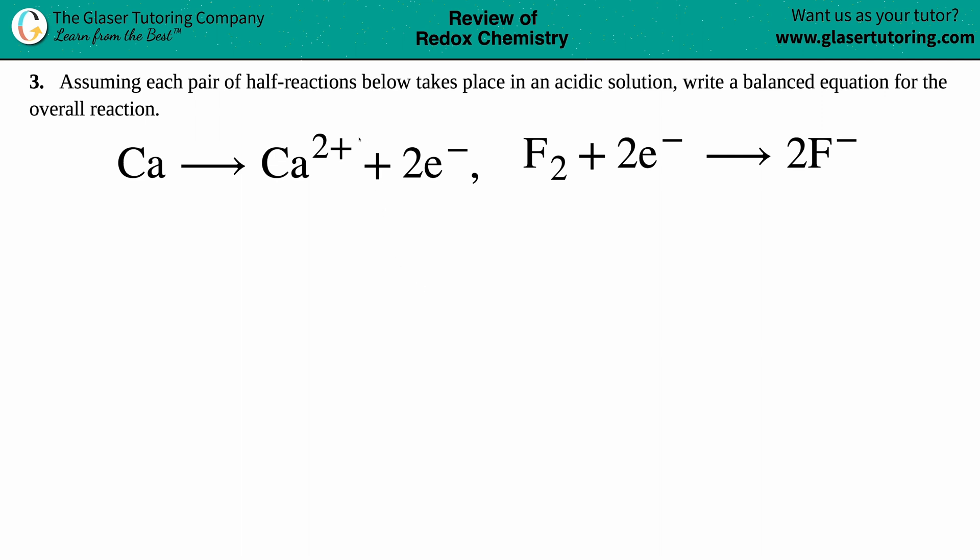Number three: Assuming each pair of half-reactions below takes place in an acidic solution, write a balanced equation for the overall reaction. They give us the two reactions: calcium yields Ca²⁺ plus two electrons (e⁻ just means electrons), and then we have F₂ plus two e⁻ yields two F⁻.